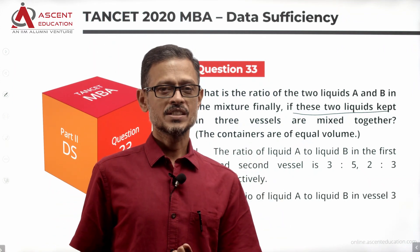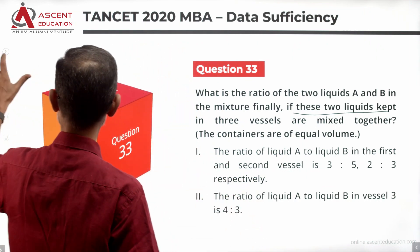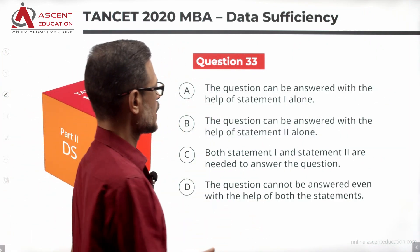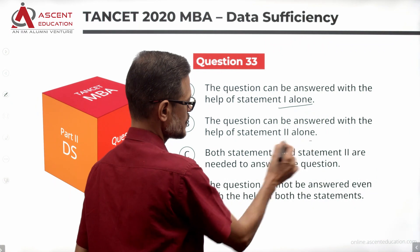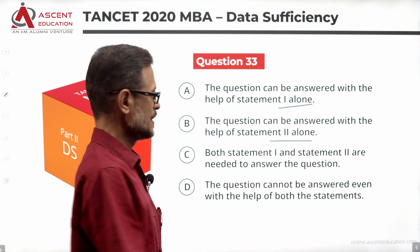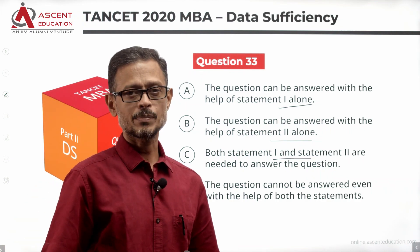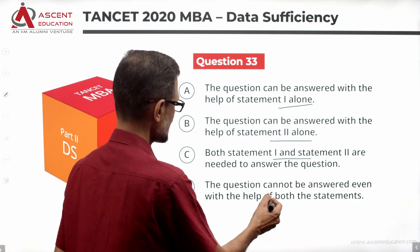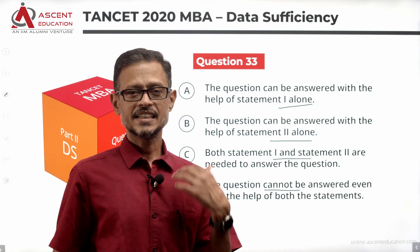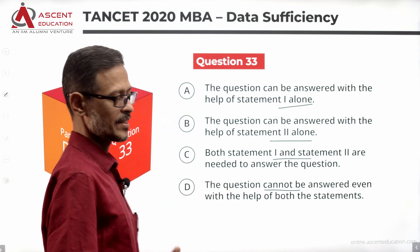We will take a look at the answer options and then look at the statements. Answer options are: A if statement 1 alone is sufficient to answer, B if statement 2 alone is sufficient to answer, C if you need both statements 1 and 2 together to answer, and D if insufficient data.